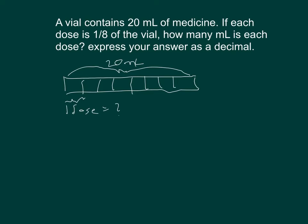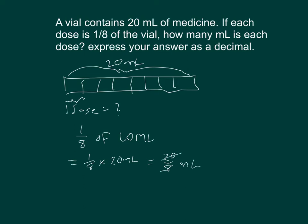So let's work that out. One-eighth of 20 milliliters equals one-eighth times 20 milliliters, which equals twenty-eighths of a milliliter. We can simplify by dividing both by four, giving us five-halves of a milliliter, which equals two and one-half milliliters per dose.